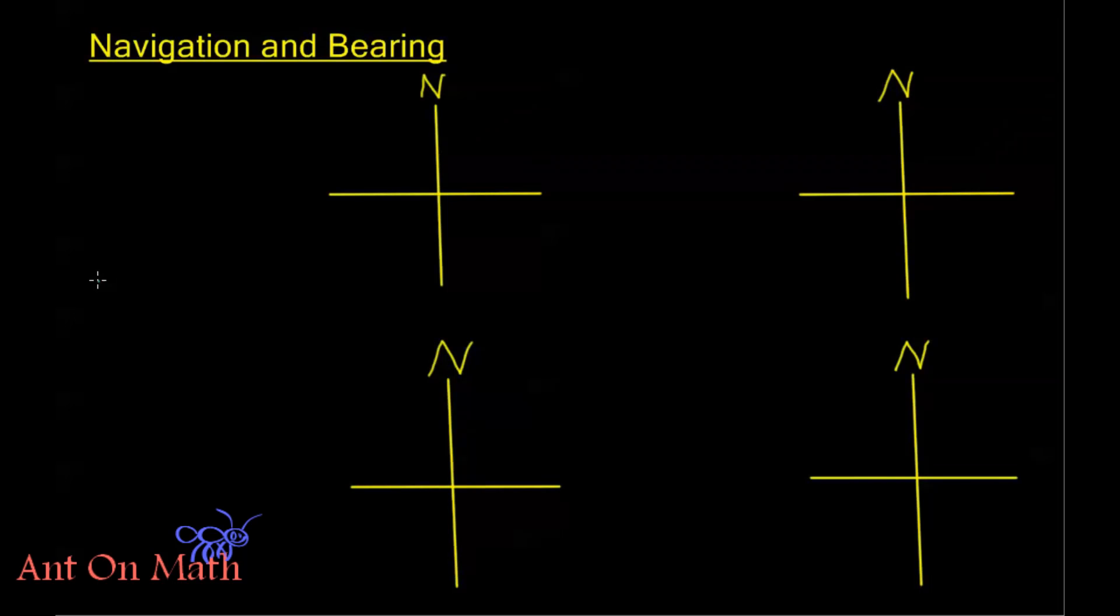But first I need to talk a little bit about navigation and bearing. Often times in navigation we use what's called a bearing, and what a bearing does is it either starts with north and south and then gives a degree change in the direction east or west. This gives the total direction or bearing of travel. Let's look at a couple of examples so we get comfortable with this.